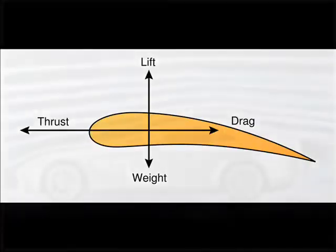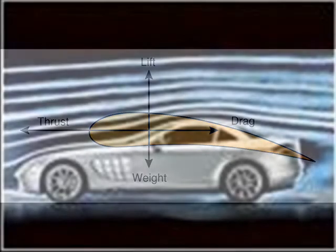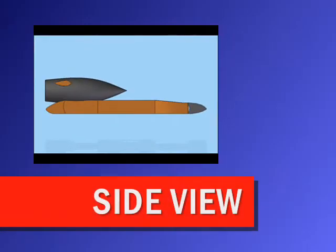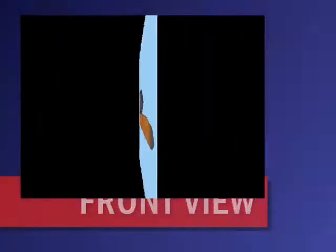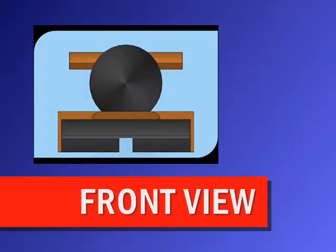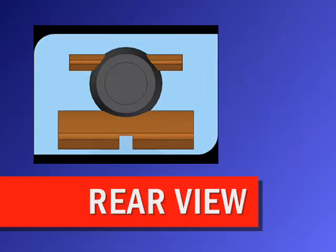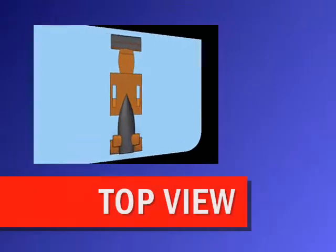When a car moves, there is always an opposite force produced by the air against the moving body, called air resistance or drag. Drag always slows down the speed of a car. Therefore, a suitable method to reduce drag is obviously desirable. By creating a sleek car body which allows smooth airflow, the drag will be greatly reduced.